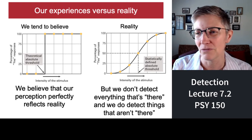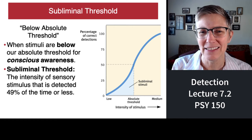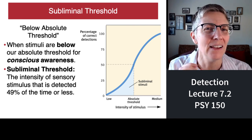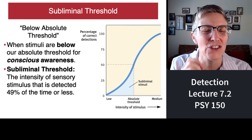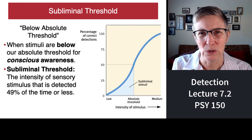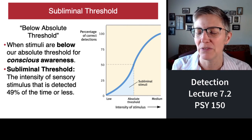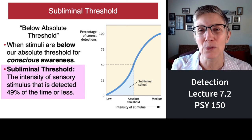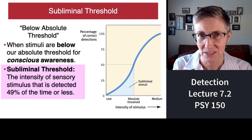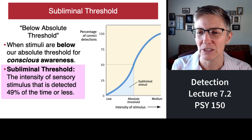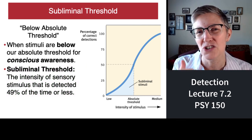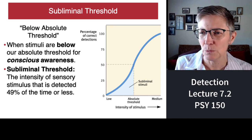What do you call it when you can detect something that's just barely there, a sort of gut feeling, but you don't actually know for sure? There's something called a subliminal threshold. An absolute threshold is when you can detect something 50% of the time. A subliminal threshold is when you detect something below that absolute threshold — something that's actually there but below your level of conscious awareness.